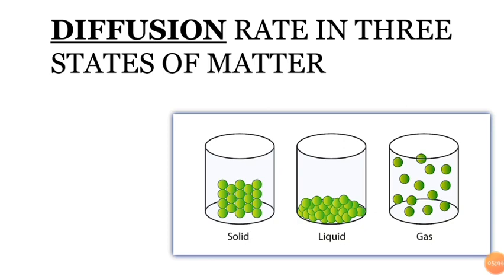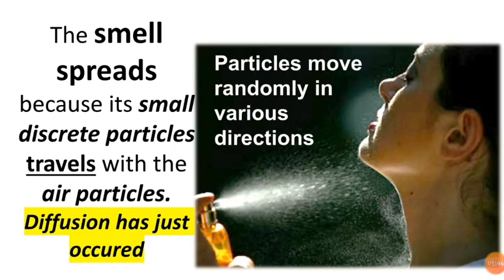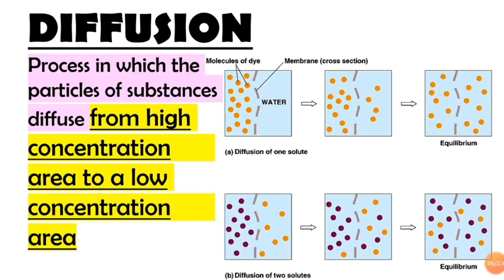What is diffusion? The smell spreads because its small discrete particles travel with the air particles. Diffusion has just occurred. Particles will move randomly in various directions. This is what we call diffusion, which the particles of substance diffuse from high concentration area to a low concentration area.